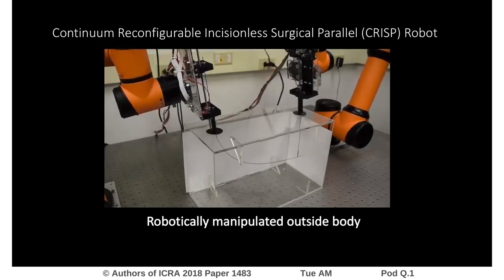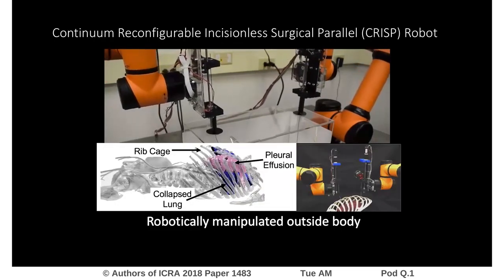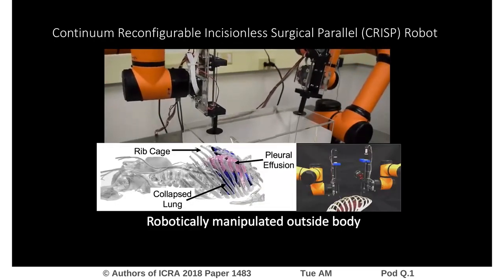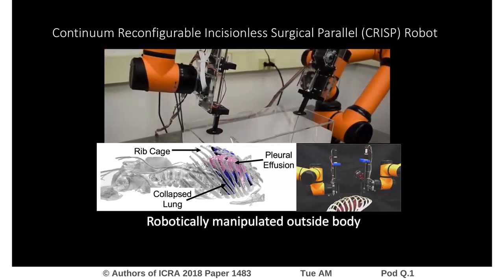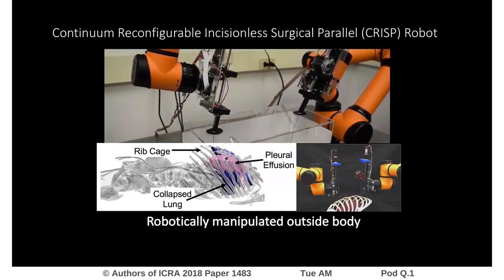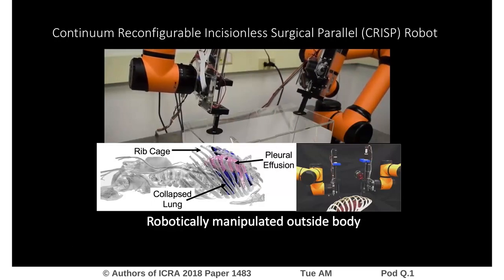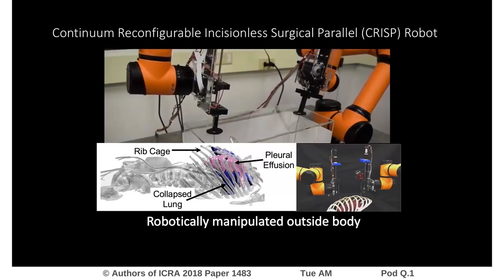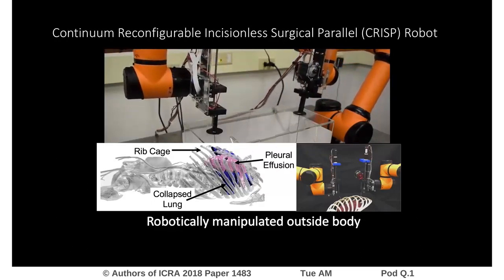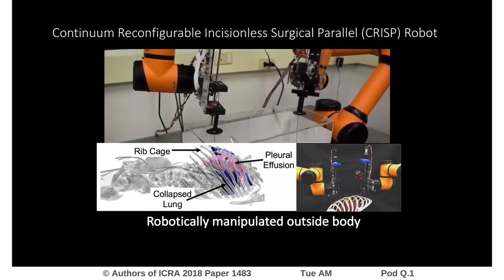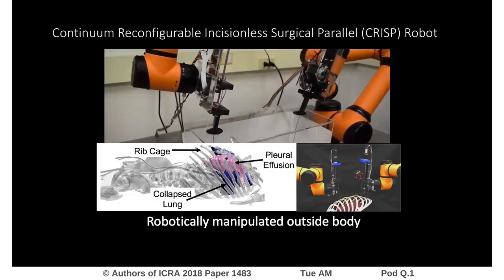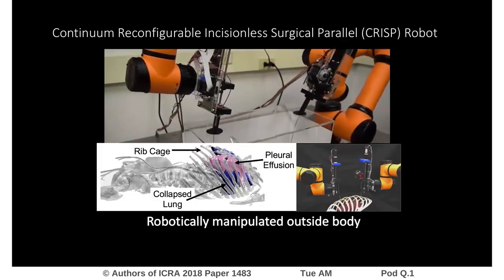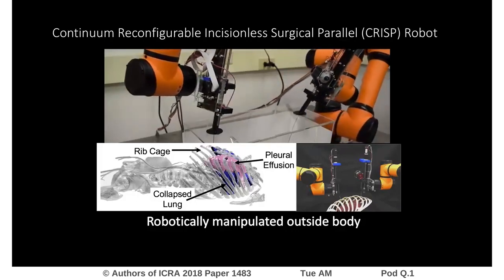One such application is diagnosing the cause of pleural effusion. Pleural effusion is a medical condition in which fluid fills the space between the chest wall and the lung. In order to diagnose the cause of the effusion, physicians must visually inspect the space. In this case, the tubes would enter between the patient's ribs and assemble into the parallel structure in the pleural space.